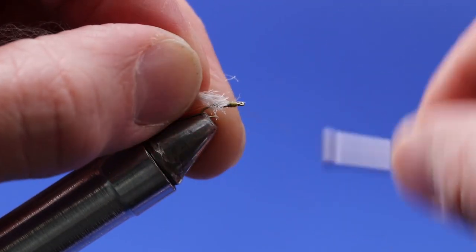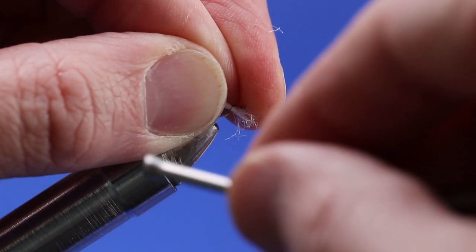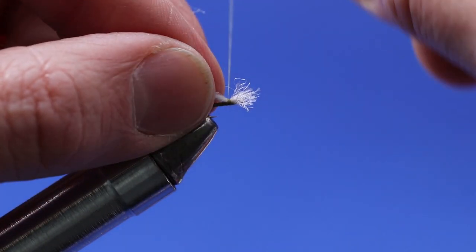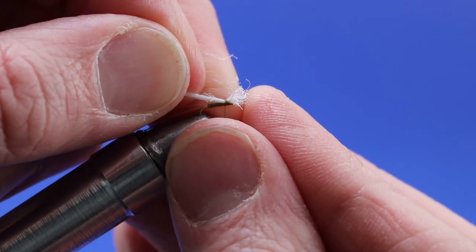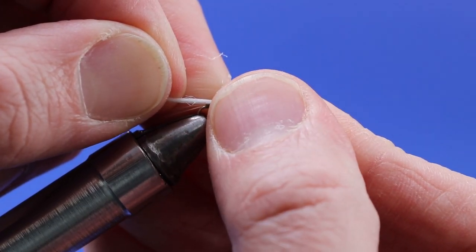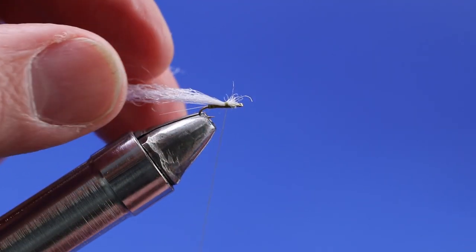So pinch wrap, one, two, three wraps around. Now I'm going to gently pull this back until I've cleared the eye right there in that hook. Right there. Give it one more wrap.